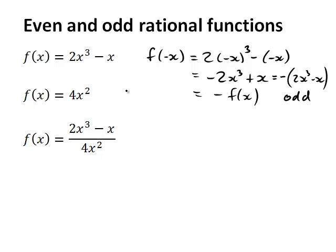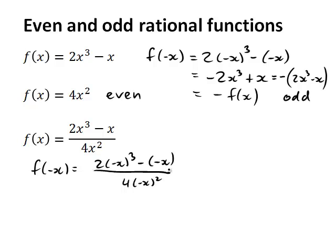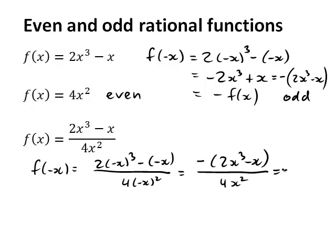Now let's look at 4x squared — that's the same as before and we know it's even. So what about the quotient of these two? f of negative x is going to be 2 times negative x cubed minus minus x, divided by 4 times negative x squared. The top turns out to be minus 2x cubed minus x, and the bottom is 4x squared. This is actually the same as negative f of x. So when we divide an odd polynomial by an even polynomial, the outcome is an odd rational function.